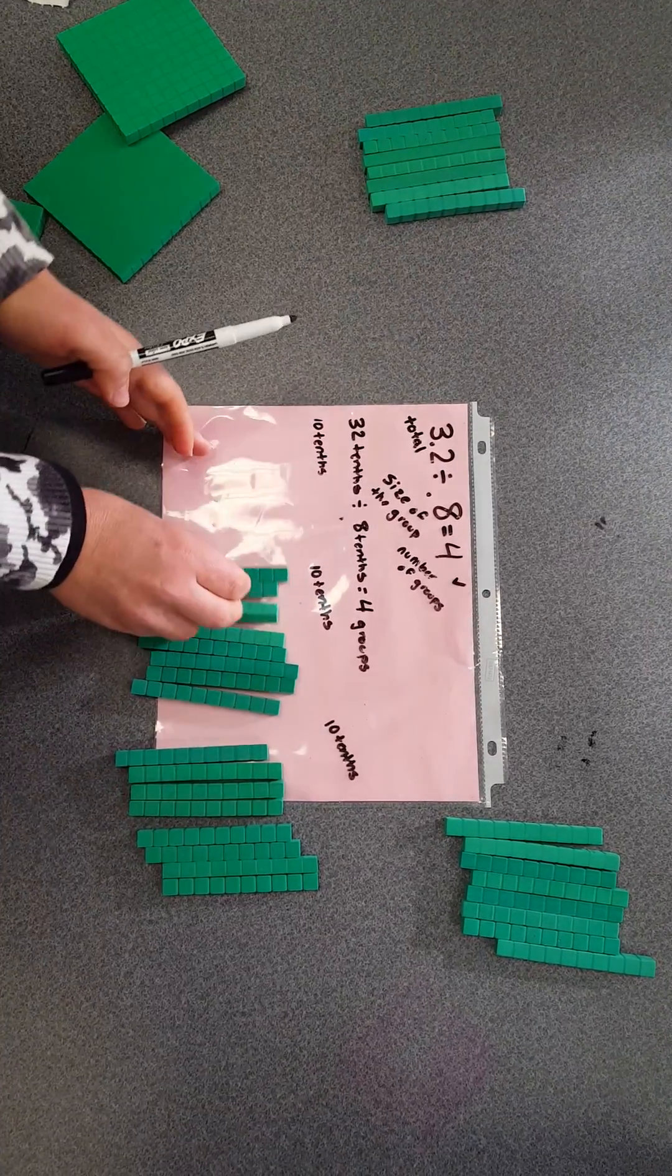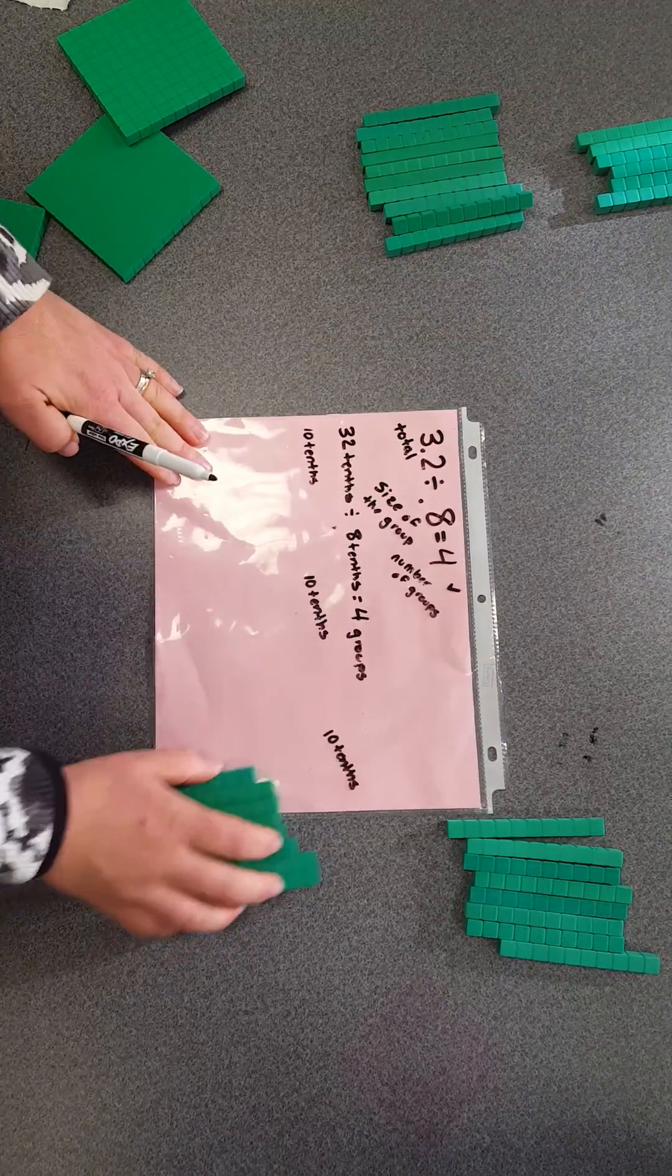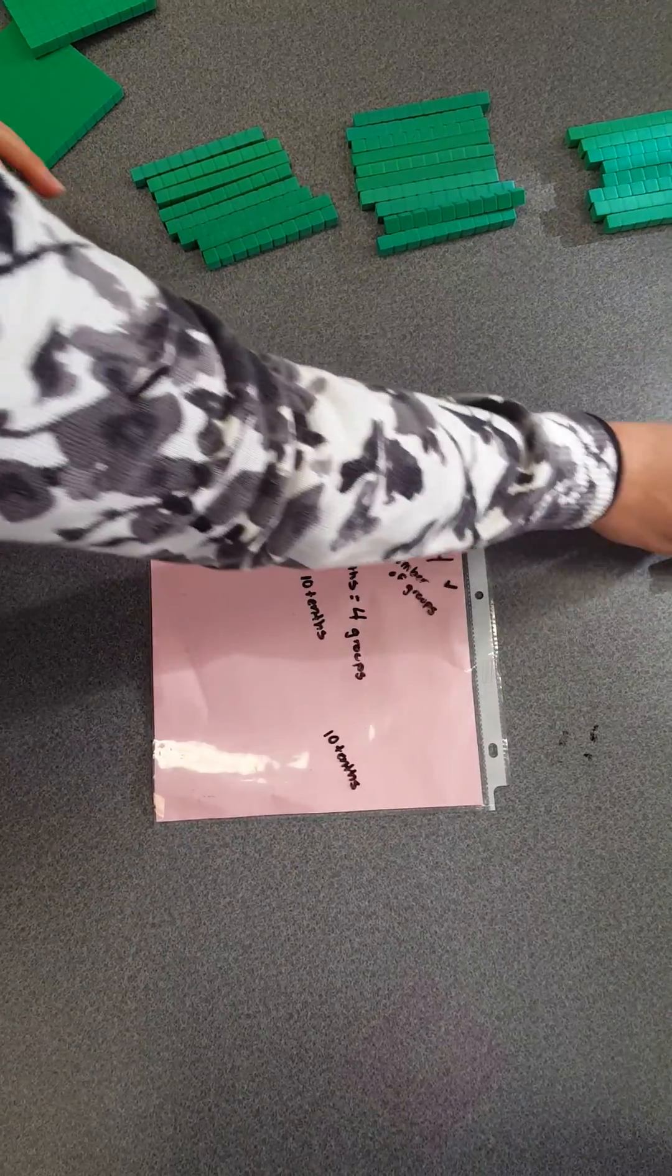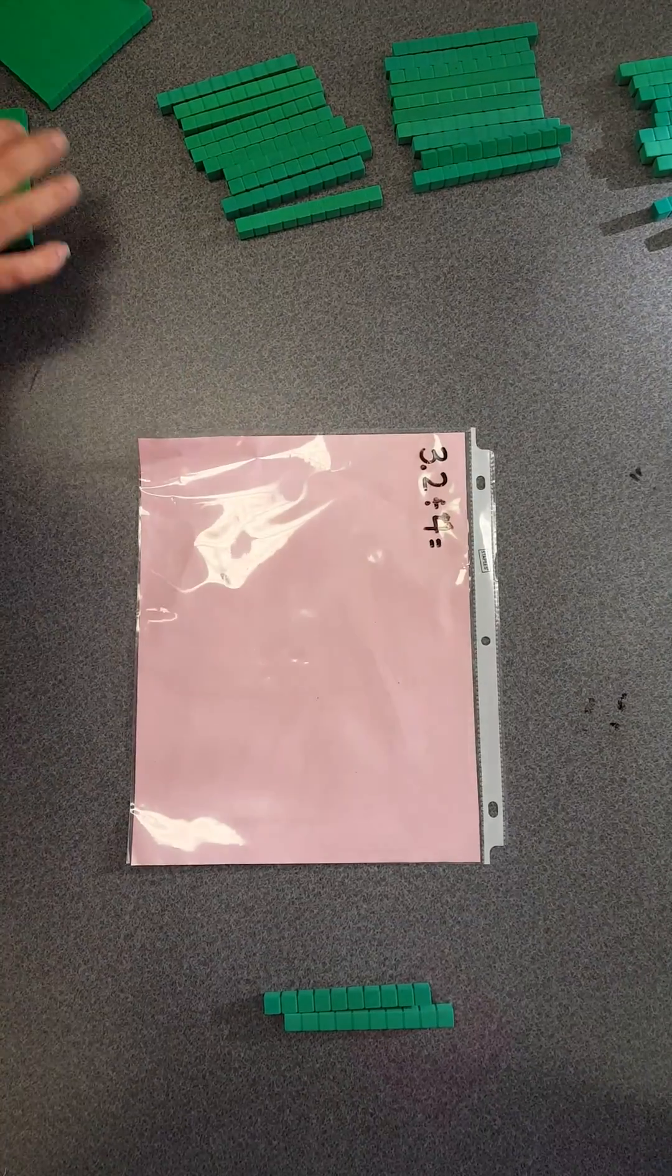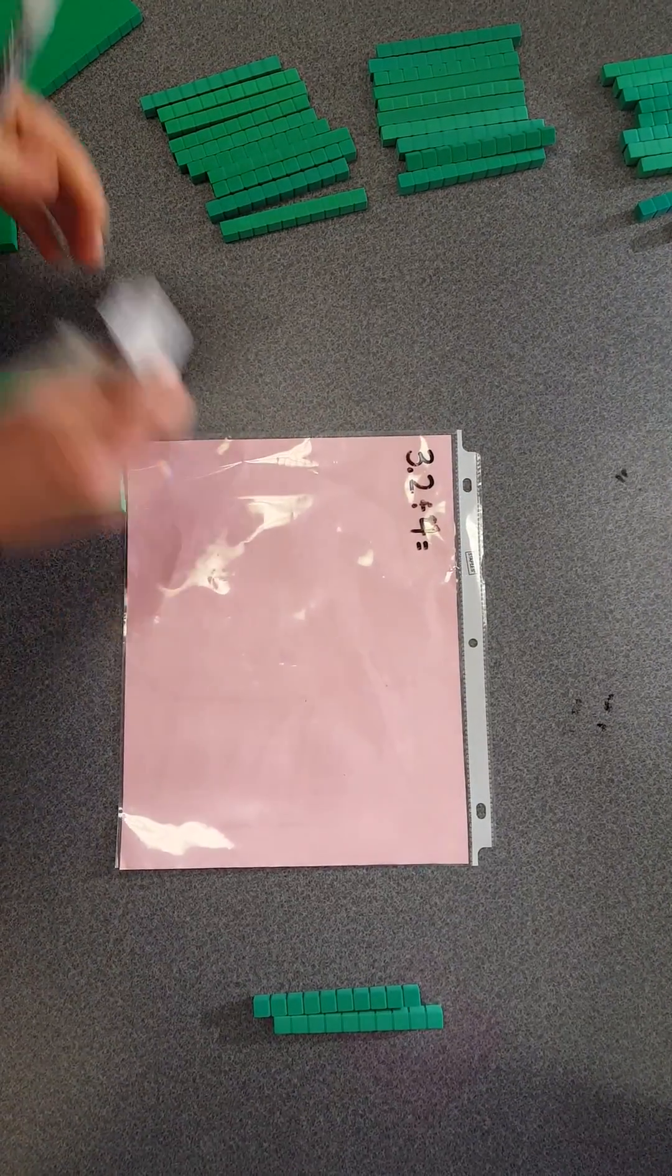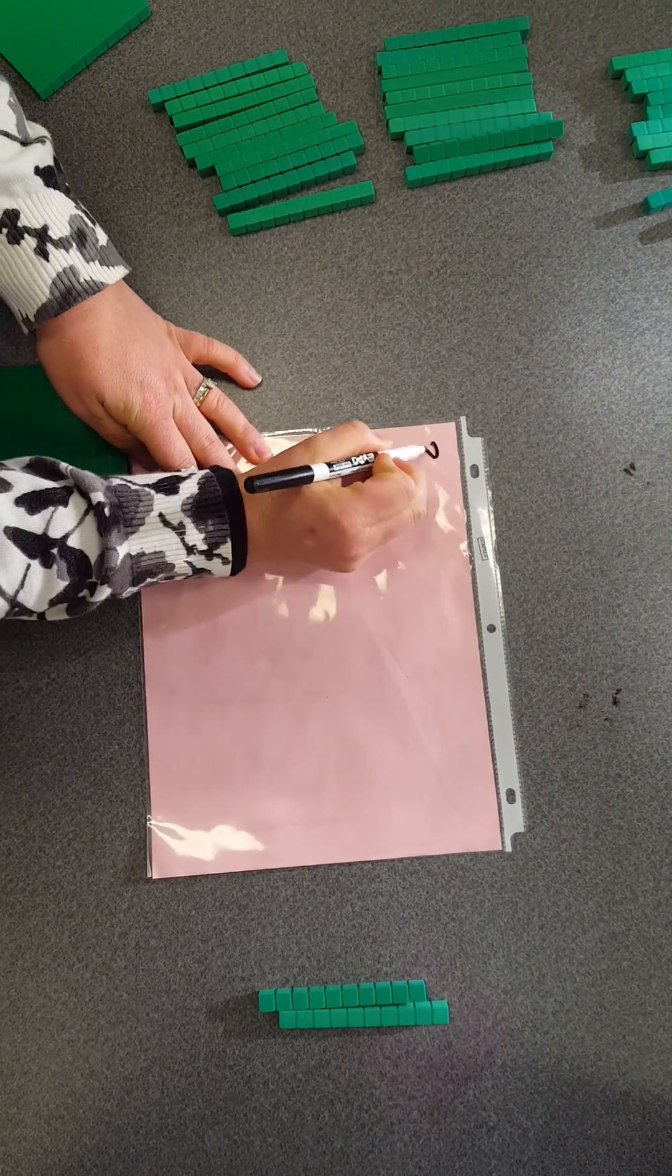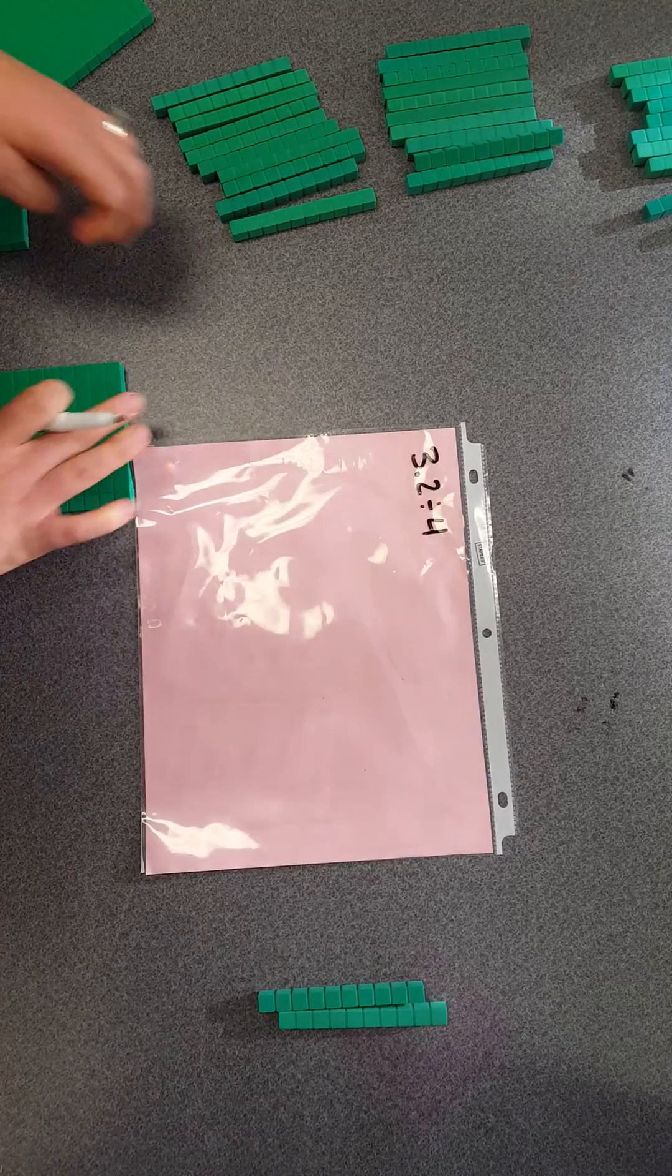I'm going to show you another problem that works on dividing decimals but looks a little different. This problem still has 3.2, but this time I'm dividing it by a whole number: I'm dividing it by 4.